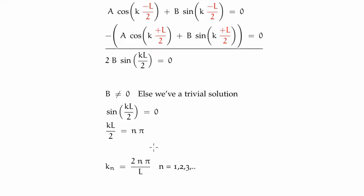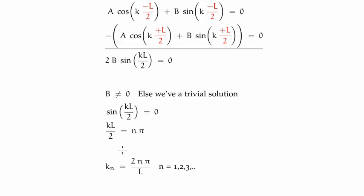Working through the steps, it basically means that kL over 2 must be equal to n pi, and in this case the wave number k sub n is 2n pi over L, where n the principal quantum number appears to be any integer from 1 to infinity.